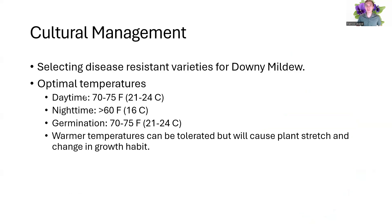For cultural management, one of the biggest things is to select a variety resistant to downy mildew. This won't exclude downy mildew from infecting a crop, but it gives you that nice resistance. Your optimal temperatures are roughly 70 to 75 degrees during the day and above 60 degrees at night. Warmer temperatures can be tolerated, but it will cause plant stretch as well as a change in growth habit.